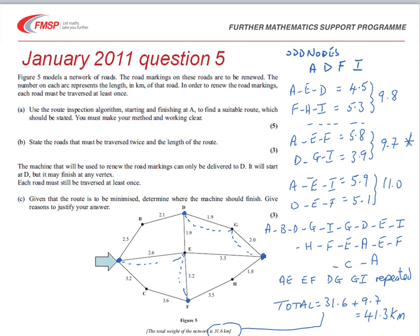The mark allocation for this part of the question was, first of all, giving a method mark as long as you've got all the possible pairs. Then accuracy marks A1, A1, and A1 for the correct values of the weights of those pairings. An A mark for a correct route. A B mark for the repetitions that we had, which parts of the route had to be repeated. And then a method mark and A mark for the answer 41.3.